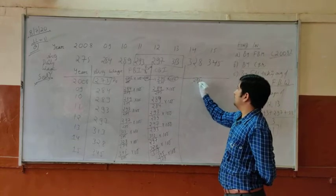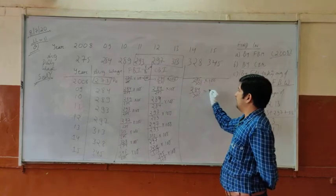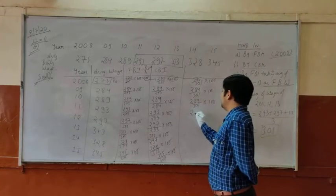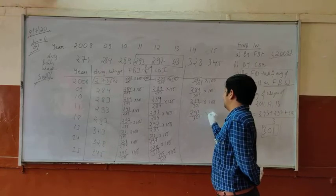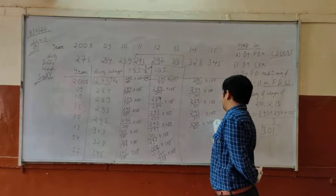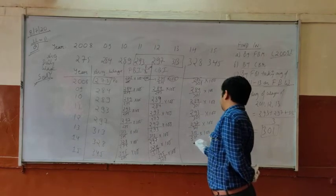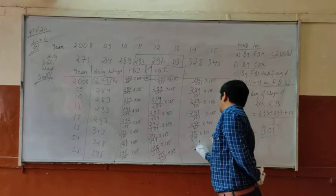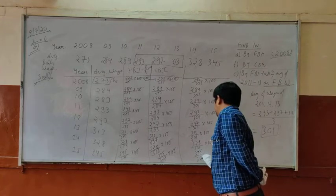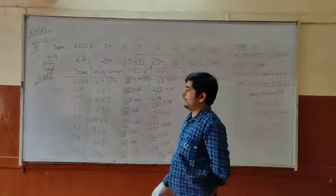Now what should we calculate? 275 upon 301 into 100. Then 284 upon 301 into 100. 289 upon 301 into 100. 293 upon 301 into 100. 297 upon 301 into 100. 313 upon 301 into 100. 328 upon 301 into 100. 345 upon 301 into 100. You can calculate it using your calculator.